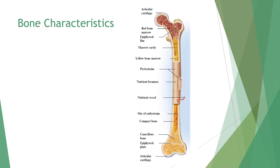Bone characteristics. The anatomical characteristics of bone include a dense connective tissue matrix, outer compact tissue, and inner porous cancellous bone including Haversian canals. This diagram of the longitudinal section of bone describes its anatomical characteristics.